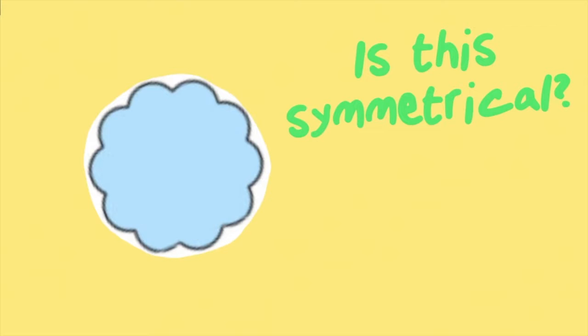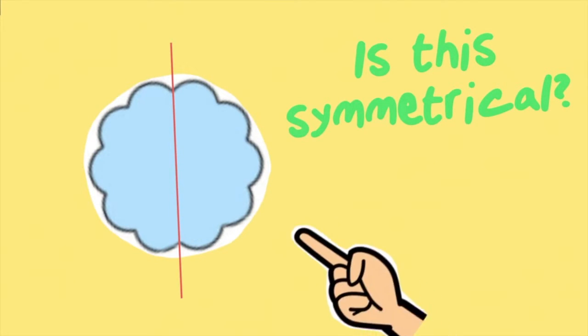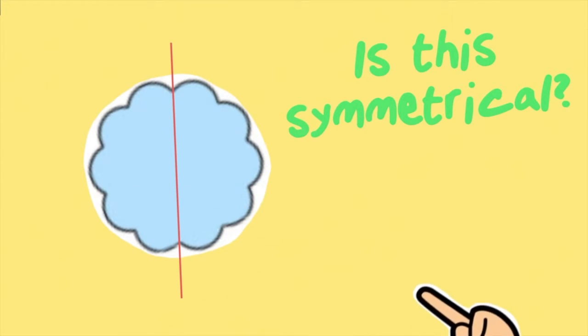Now let's have a look at this shape. Is it symmetrical? Well, if I put the line straight down the middle, it is the same on both sides. I would be able to see this reflection the exact same in the mirror. I'd also be able to cut this shape in half. So yes, it is symmetrical.